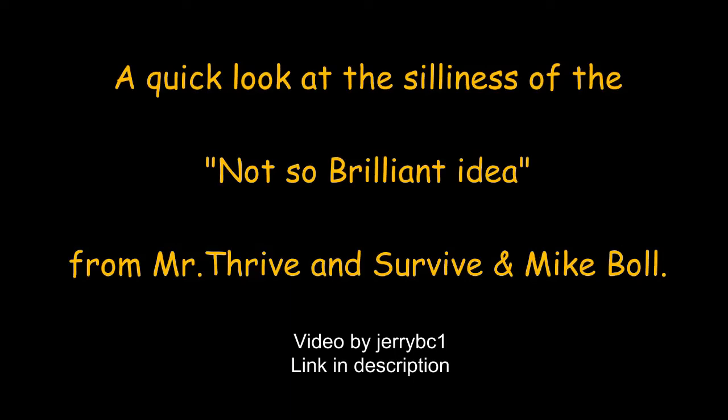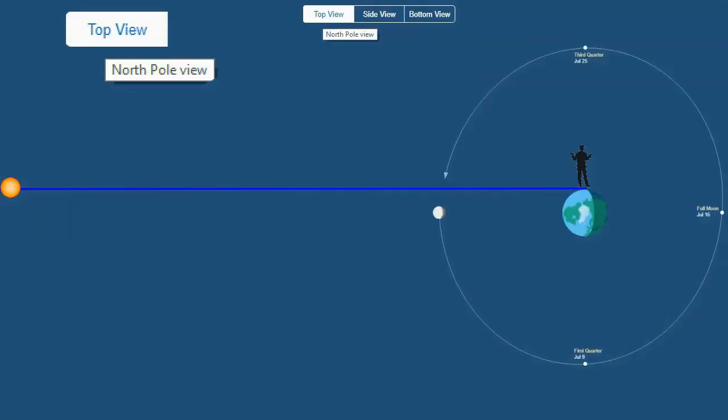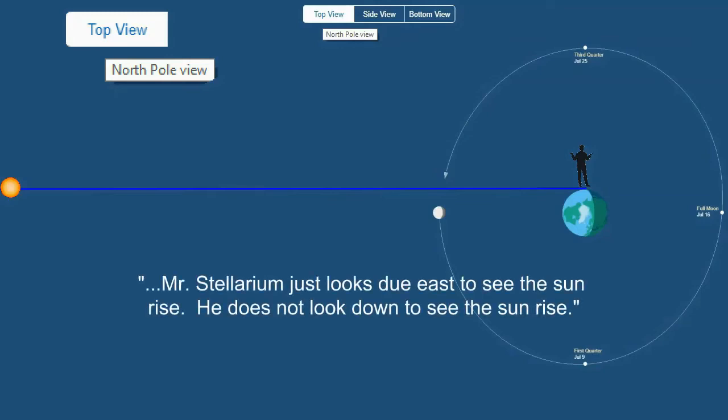A guy called JerryBC1 recently uploaded this video as a rebuttal, and Dazza the Cameraman mirrored it and heaped praise on Jerry for doing such a brilliant job. Here's what Jerry says in his video. So if we go back and look at the model that Mr. Try and Survive and Mike Ball use in their experiment, we now know Mr. Stellarium just looks to east to see the sun rise.